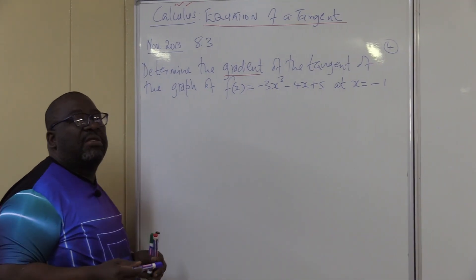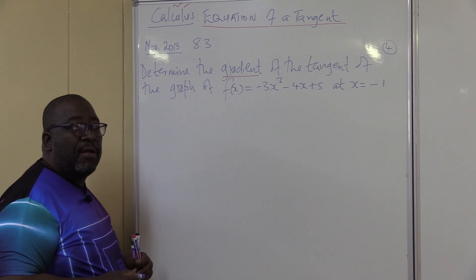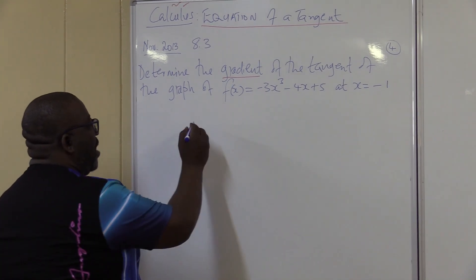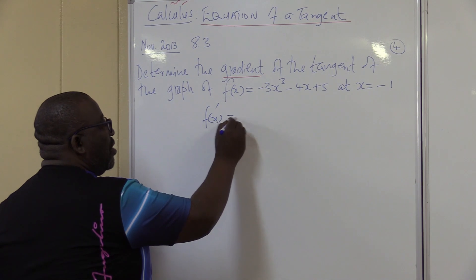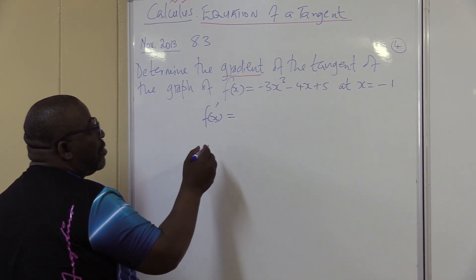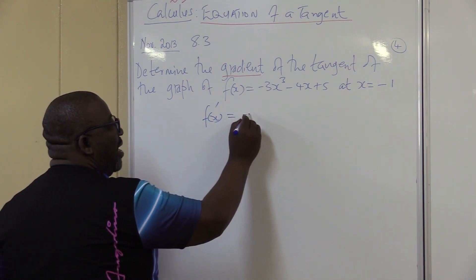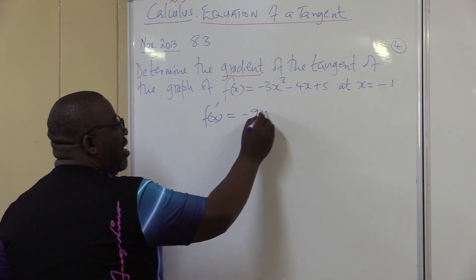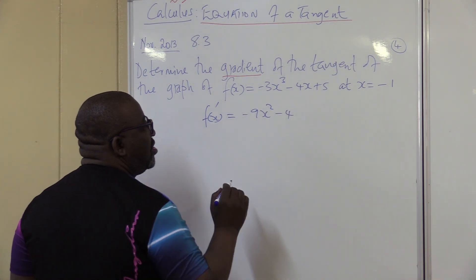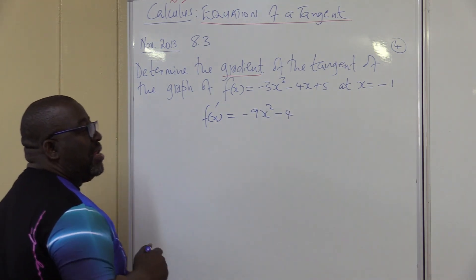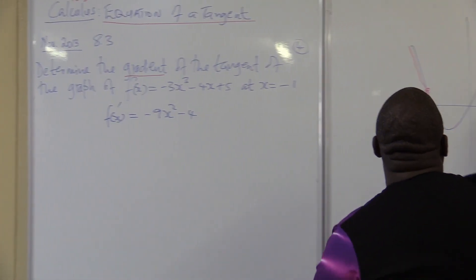When I differentiate, I'm just looking for the gradient. So my gradient, f prime of x, f prime of x is equal to — now we're differentiating — it is minus 9x squared minus 4. If I differentiate the constant, it is 0. This is the gradient anywhere.